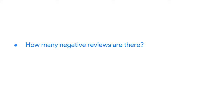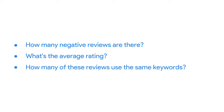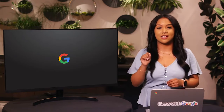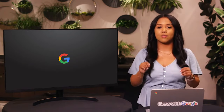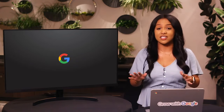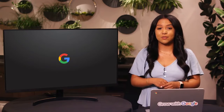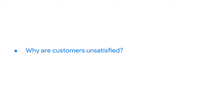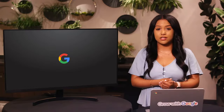First are measurable questions: How many negative reviews are there? What's the average rating? How many of these reviews use the same keywords? These questions generate quantitative data — numerical results that help confirm customers aren't satisfied. This data might lead them to ask different questions: Why are customers unsatisfied? How can we improve their experience? These are questions that lead to qualitative data. After looking through the reviews, the ice cream shop owner sees a pattern: 17 of negative reviews use the word 'frustrated' — that's quantitative data.